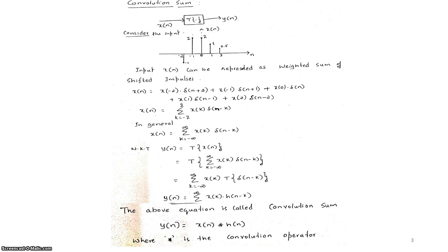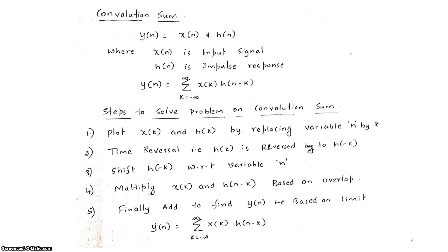For a convolution operation we require two signals: x(n) and h(n). In problems, the two signals are given as x(n) and h(n), or sometimes as x₁ and x₂. To perform convolution we use the equation y(n) = summation from k = -∞ to +∞ of x(k)·h(n-k).